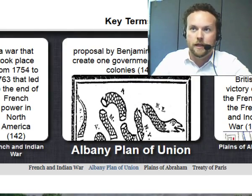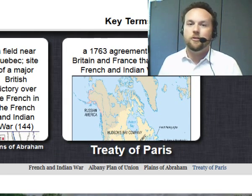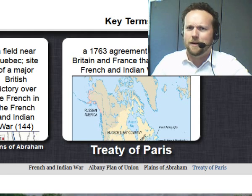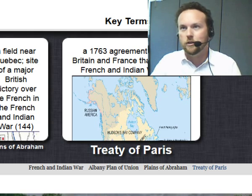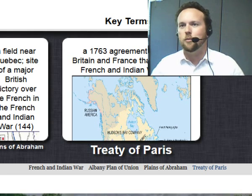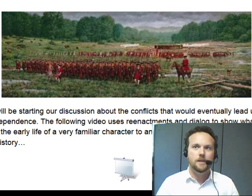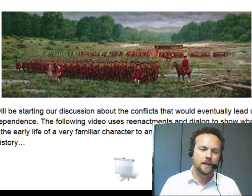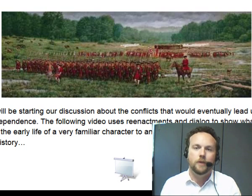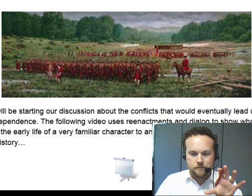We will also talk about the Albany Plan of Union, the Plains of Abraham, and the Treaty of Paris. There have been many Treaties of Paris, but this one in particular brought an end to the French and Indian War — just take that and put it in the sticky part of your brain. Today we're going to start talking about the conflicts that would eventually lead to the War for Independence, and the French and Indian War is one of the conflicts that leads ultimately to independence for the colonies.